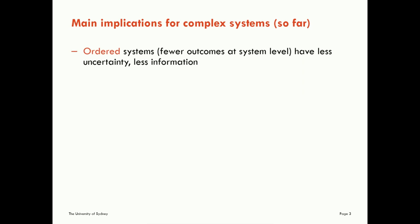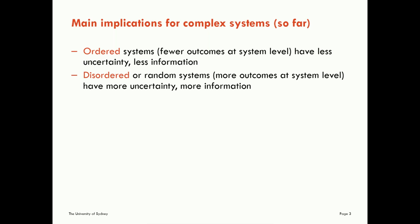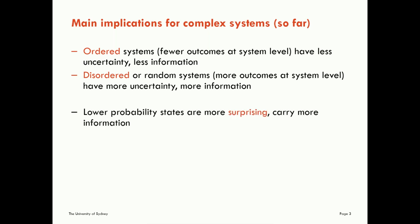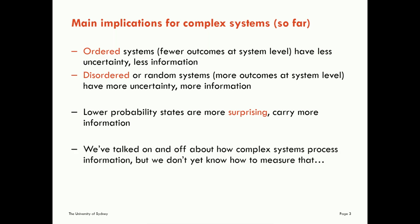We also talked about the differences between order and disorder. Ordered systems, which have fewer outcomes at the system level, seem to have less uncertainty and less information in which outcome we're observing. Disordered or random systems, which have more outcomes at the system level, seem to have more uncertainty and more information contained in them. We talked about how low-probability states of a system are more surprising to us as observers and carry more information — though again, we didn't strictly define what we meant there yet.